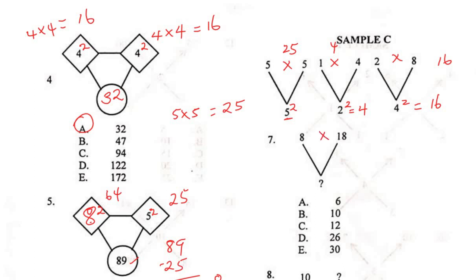For Question 7: 18 × 8 must rhyme with the square of the base number. 8 × 8 = 64, carry 6; 8 × 1 = 8 + 6 = 14, so 8 × 18 = 144. The base number must be 12, because 12² = 12 × 12 = 144. The correct answer is C.